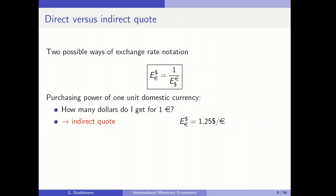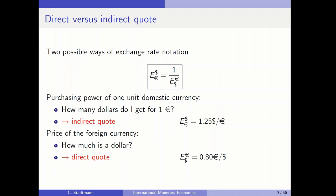By computing the reciprocal value you can switch from one notation to the other. The so-called indirect quote answers the question: how many dollars do I get for one euro? — here it is assumed you get 1.25 US dollars for one euro. The direct quote answers: how much does a dollar cost? — that is, we are asking for the price of the foreign currency. The direct quote is 0.8 euros for one dollar.